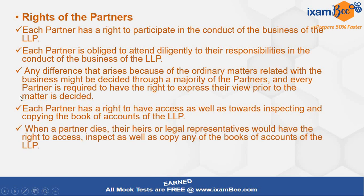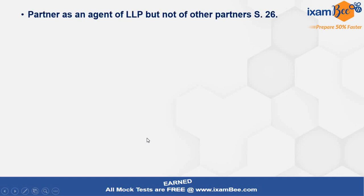When a partner dies, this is also an important point: their heirs or legal representatives would have the right to access, inspect, and copy the books of accounts, and they can also choose or elect to continue as partners. Even if they are legal heirs or legal representatives, they will have the choice to continue and have access to inspect and copy the books of accounts. One more important point to add here is that a partner is an agent of the LLP but not of other partners. This is an important topic of agency found in partnership firm law and also in LLP.